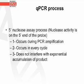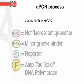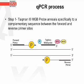Now let's go through the qPCR process. There is a 5' nuclease assay process, which means the nuclease activity is on the 5' end of the probe. It occurs during PCR amplification, in every cycle, and does not interfere with the exponential accumulation of product. In the first part of the process, the TaqMan MGB probe anneals specifically to a complementary sequence between the forward and reverse primer sites.